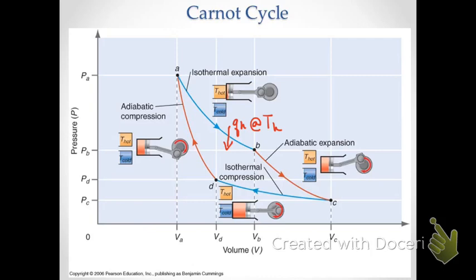In the first step of this process, starting with point A going to point B, we have an isothermal expansion in which heat flows in from a heat source — in the case of an engine, that might be a gasoline combustion engine of some kind — flows into the system. The gases expand isothermally from point A to point B.